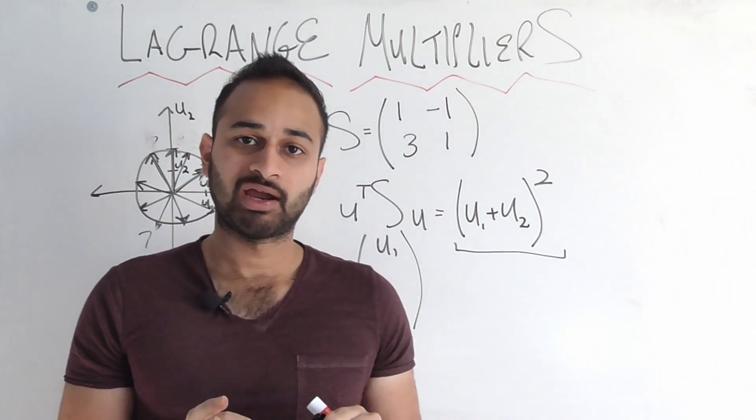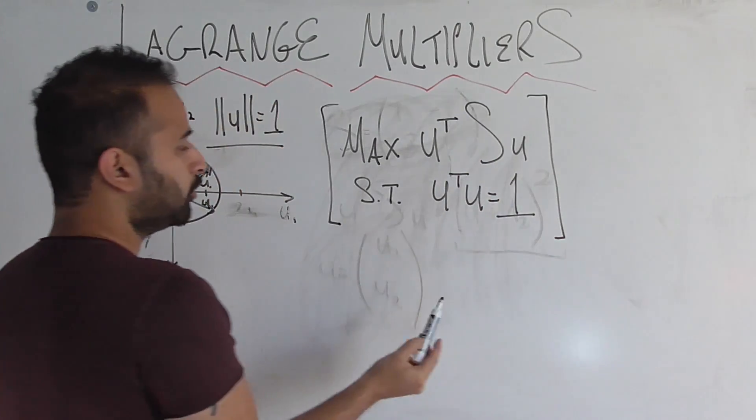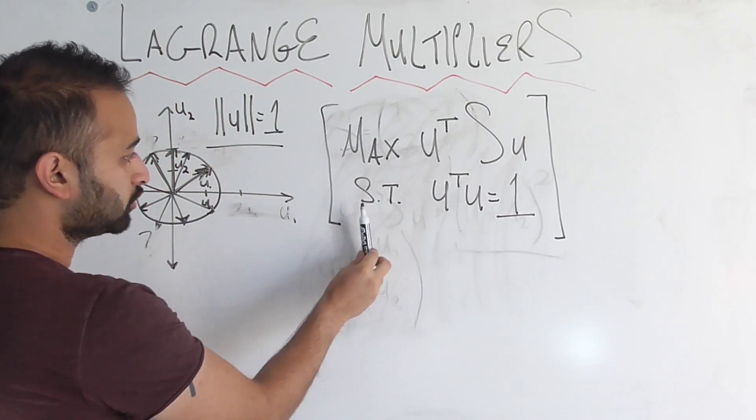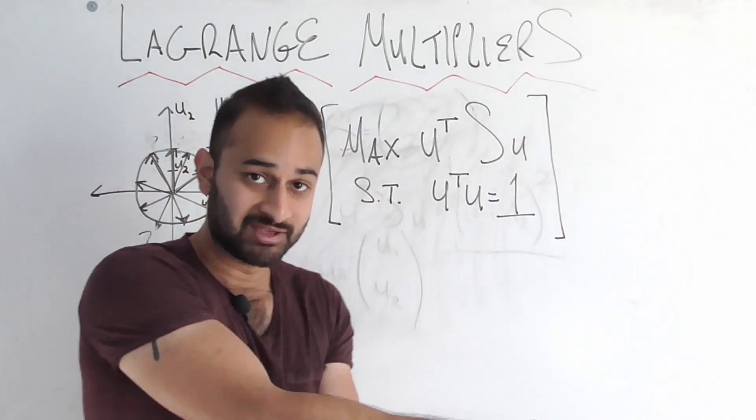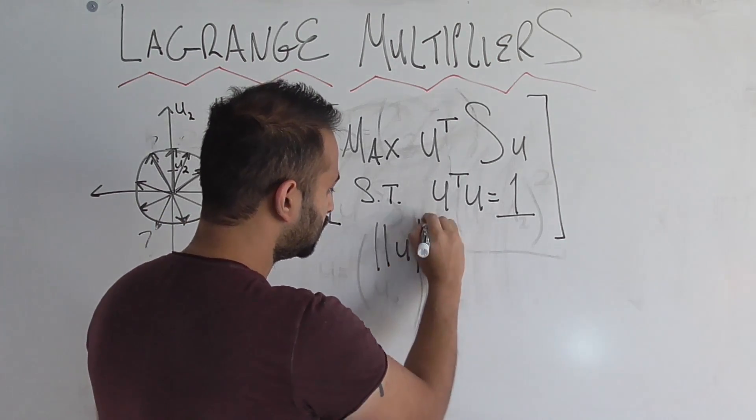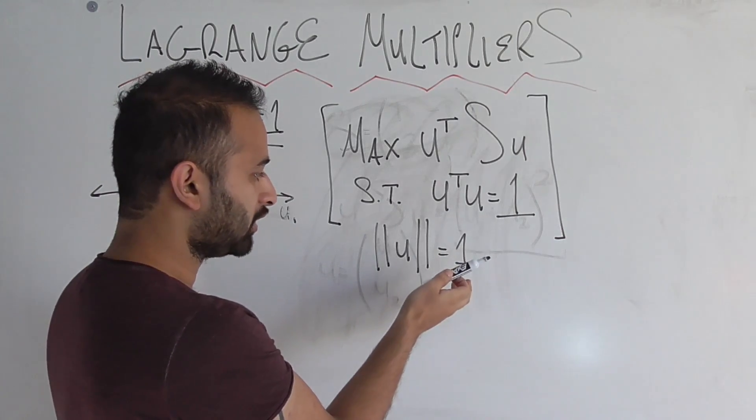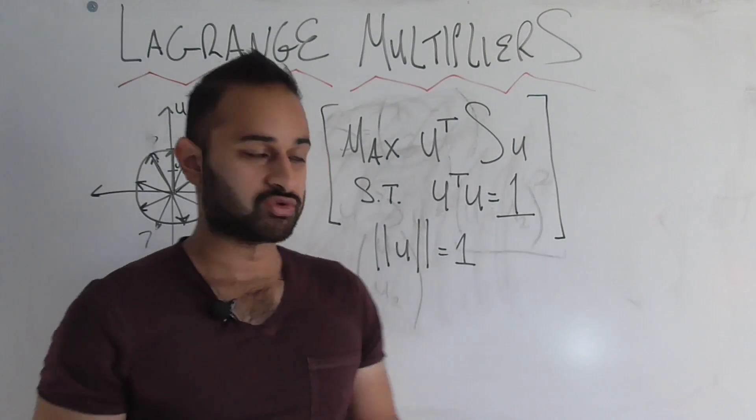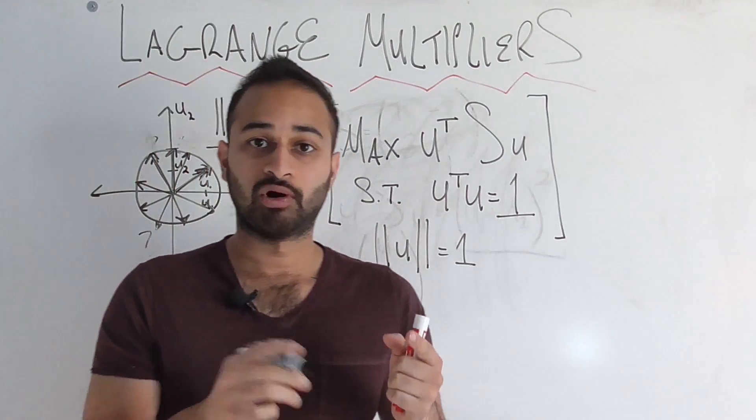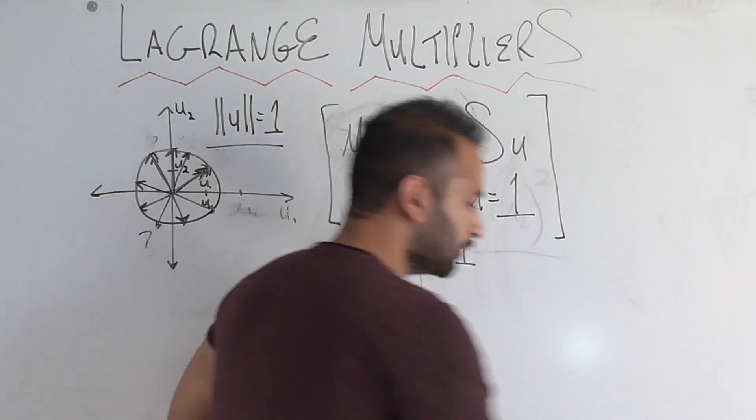Our problem after the constraint is taken into account ends up being this. We want to maximize U transpose SU, because that's our measure of success based on our super smart scientist friend. But now, subject to, so ST stands for subject to, or such that, it basically says, given the constraint this, the constraint being U transpose U is equal to 1. Now that looks slightly different than the constraint I gave before. Before I was saying I want magnitude of U to be equal to 1, but U transpose U is just the magnitude of the vector U squared, and 1 squared is just 1. So this is really the same constraint. U transpose U, since U only has two elements, U1 and U2, is going to be U1 squared plus U2 squared. And that's the same thing as the square of the magnitude of U, because it's given by the same formula.